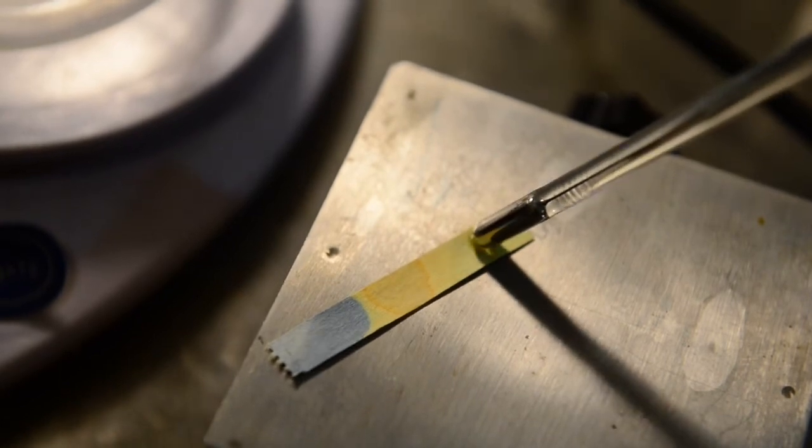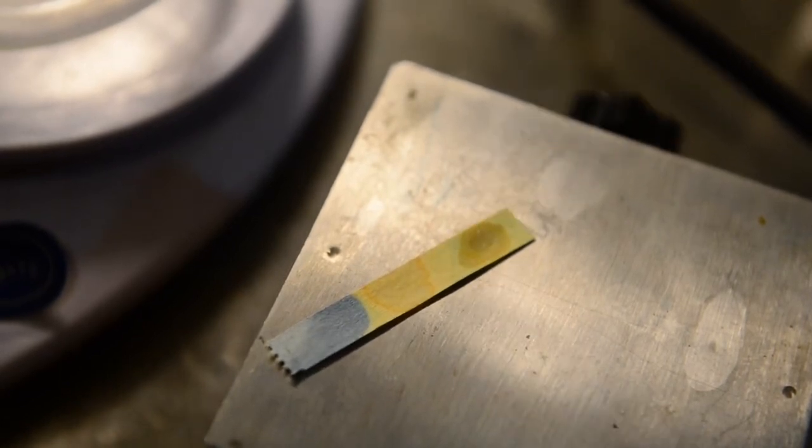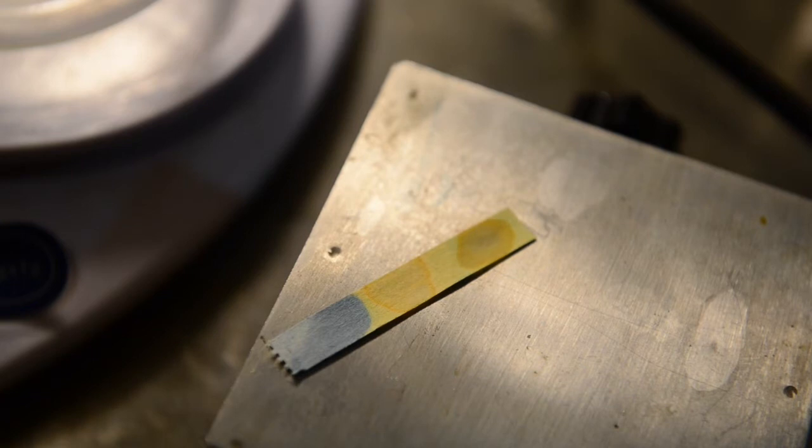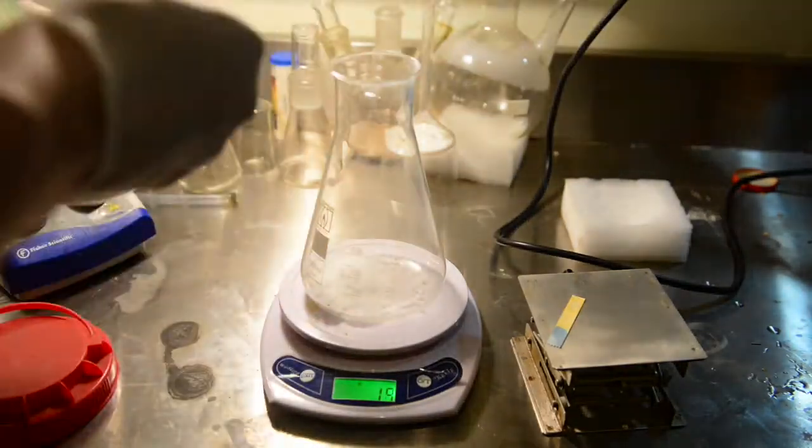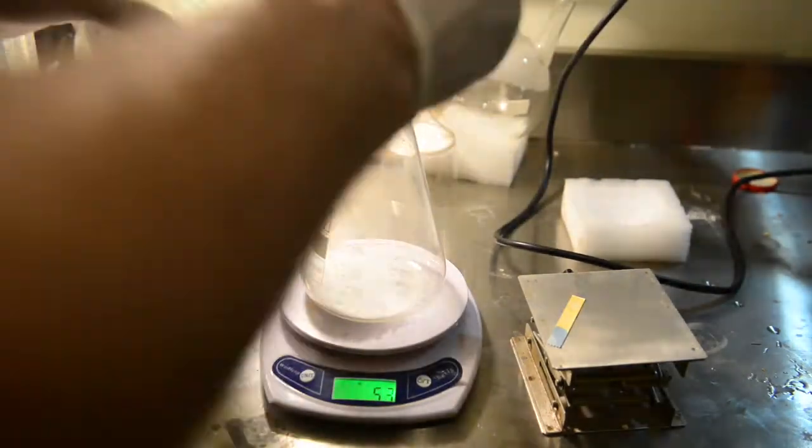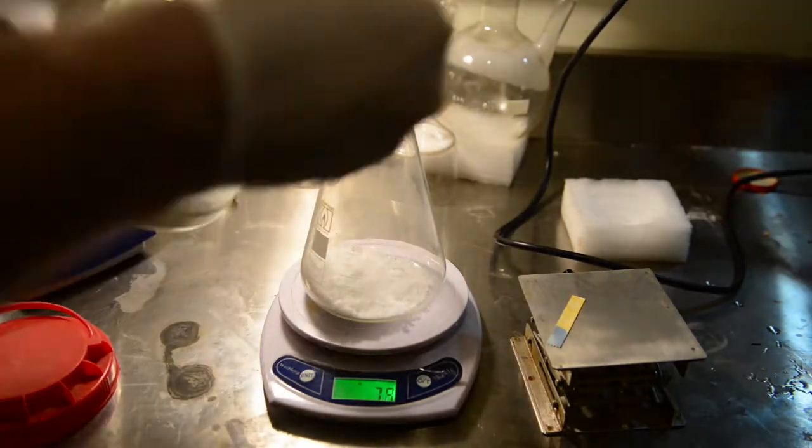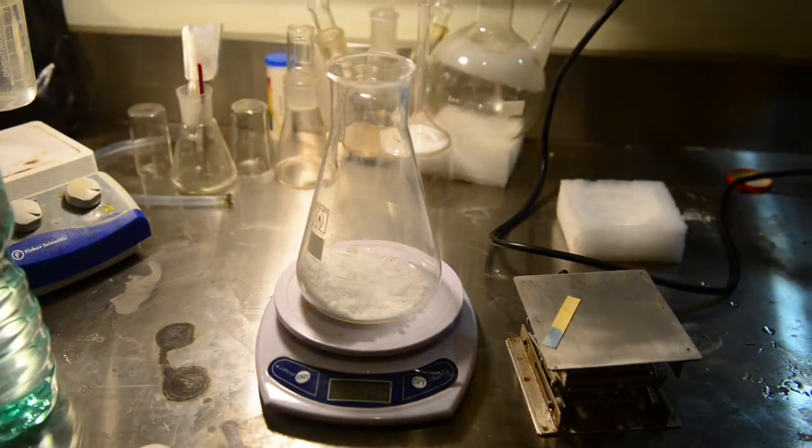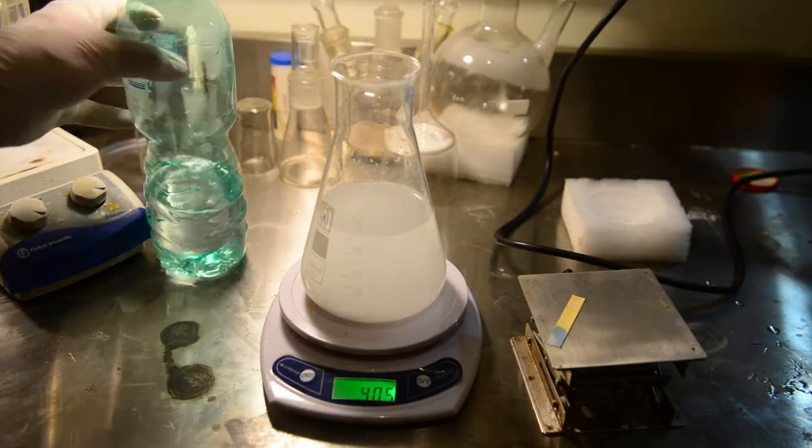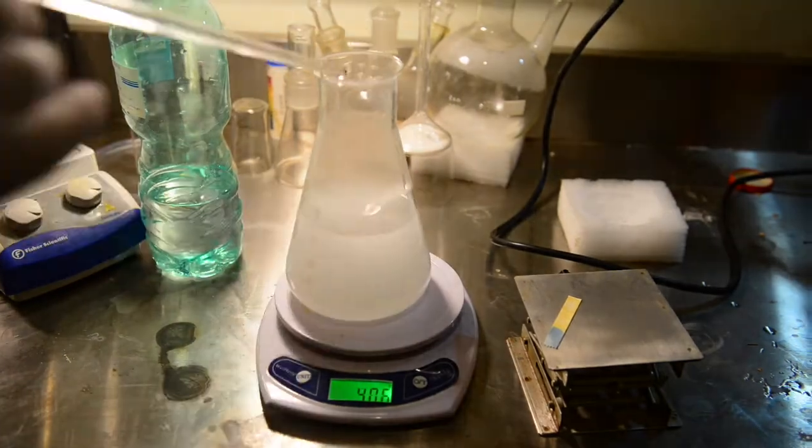First, let's check the pH of the liquid. It is acidic because of the formic acid present in the distillate. Make a 16% sodium hydroxide solution. For this, we took 80 grams of sodium hydroxide and 400 grams of distilled water. Stirred sodium hydroxide to dissolve and added our solution to the distillate.